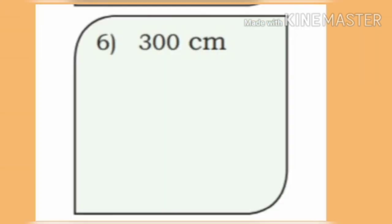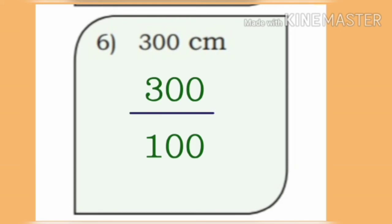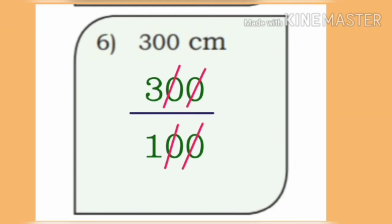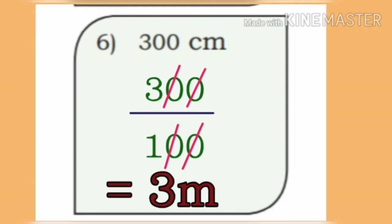Now, sixth one: 300 centimeter. Let us divide 300 by 100. Cancel the zeros on numerator and denominator. We get the answer as 3 meter.